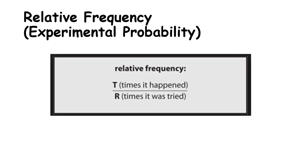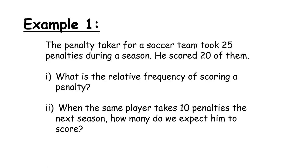Experimental probability is calculated as: the number of times something happened divided by the number of times it was tried. Maybe you scored 4 out of 10 penalties - that gives a probability of 4/10 or 2/5. The penalty taker for a soccer team took 25 penalties and scored 20 of them. What is the relative frequency of scoring a penalty? Based on experience, he scored 20 out of 25. Dividing above and below by 5 gives a 4/5 chance of scoring.